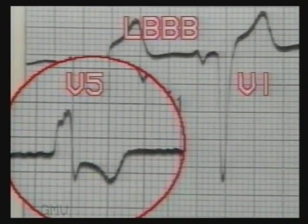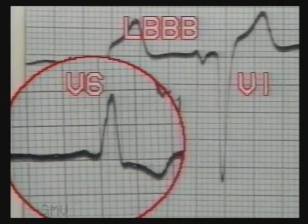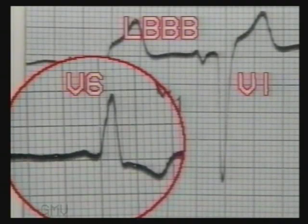This is another ECG of left bundle branch block. See the broad and deep S-wave in V1. The inset shows an RR' pattern in V5. This is a broad slurred R-wave in V6.